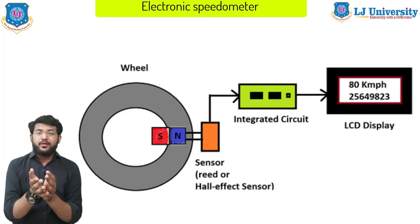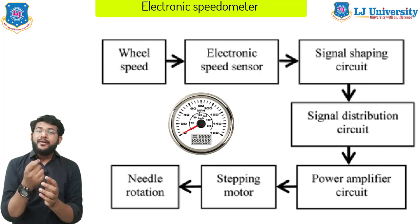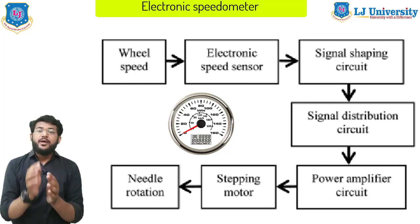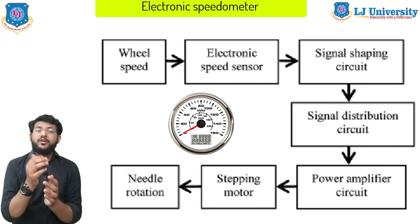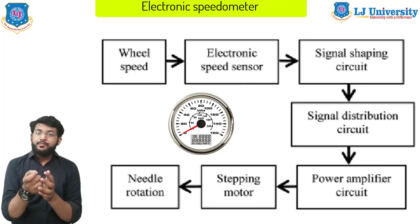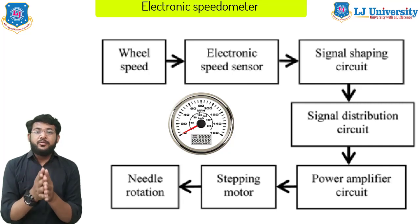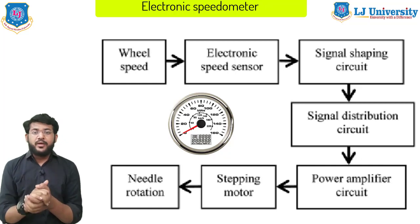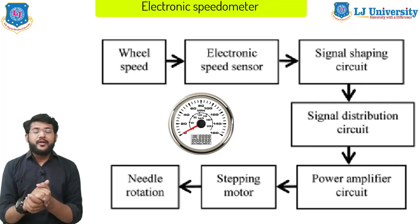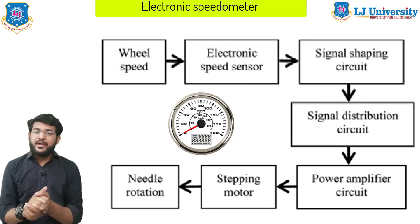Electronic speedometers can also display speeds with analog pointers and dials, just like traditional eddy current speedometers. In that case, the electronic circuit drives a highly controllable electric motor called a stepper motor, which rotates the pointer through the appropriate angle. Electronic speedometers are more reliable and compact than mechanical ones, and the motion sensors can be any distance from the display, making them suitable for any kind of vehicle from a bicycle to a 40-ton truck.